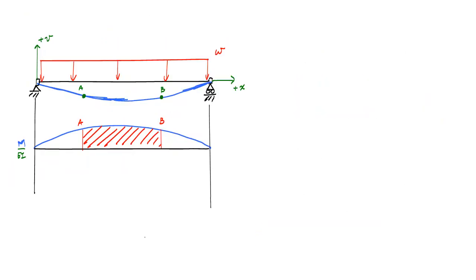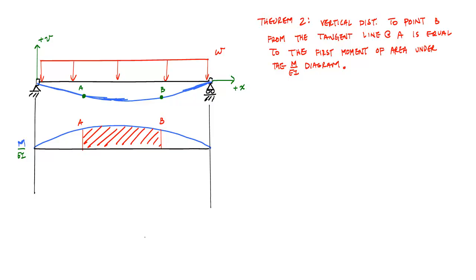Now, for the second moment area theorem, let's consider the same simply supported beam, same curvature diagram. And this time, for the second moment area theorem, we're looking at vertical distance between tangent lines. And what it says is that the vertical distance to a point, in this case point B, or the tangent line at point B, from the tangent line at A is equal to the first moment of area under the m over ei diagram.